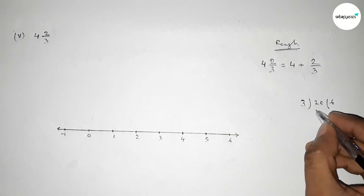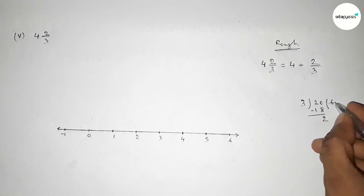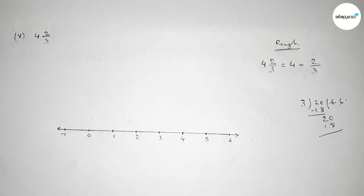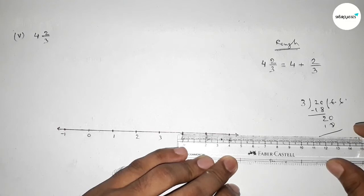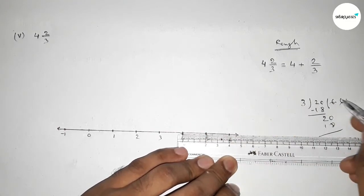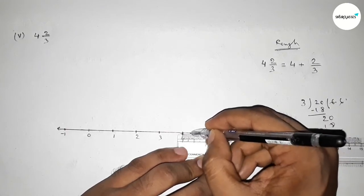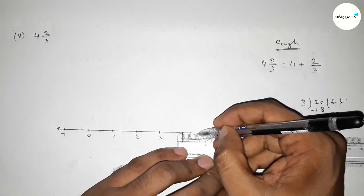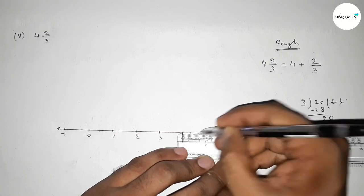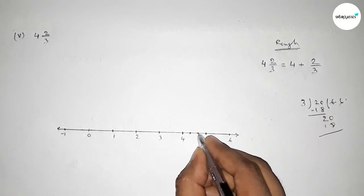We have to divide the total length between four and five. Since we take a scale of 20 units between any two numbers, the length of each part will be approximately 6.66 units. Dividing the distance between four and five into three equal parts: approximately 6.6 and approximately 13.2. By this way we can divide the distance into three equal parts.